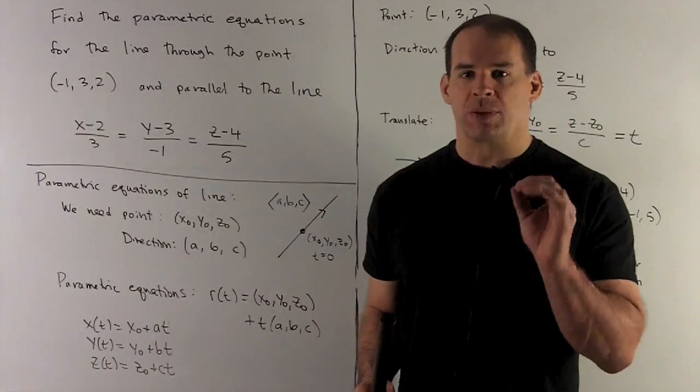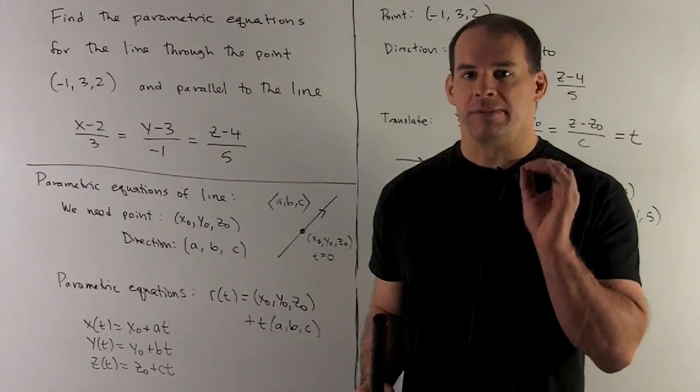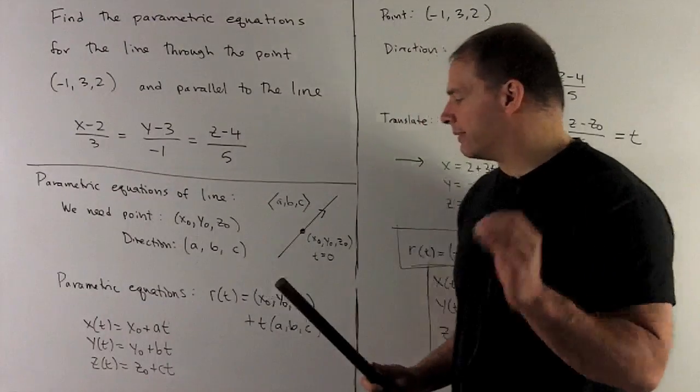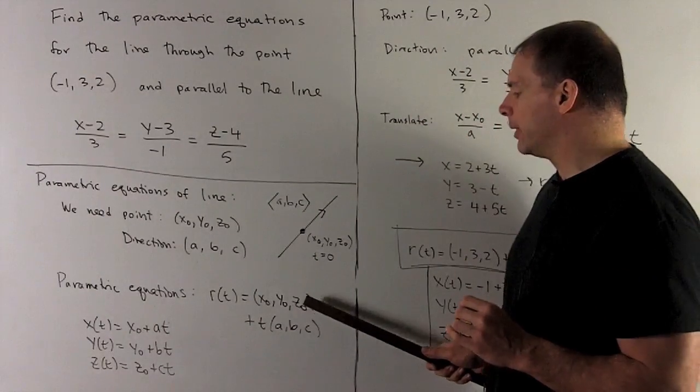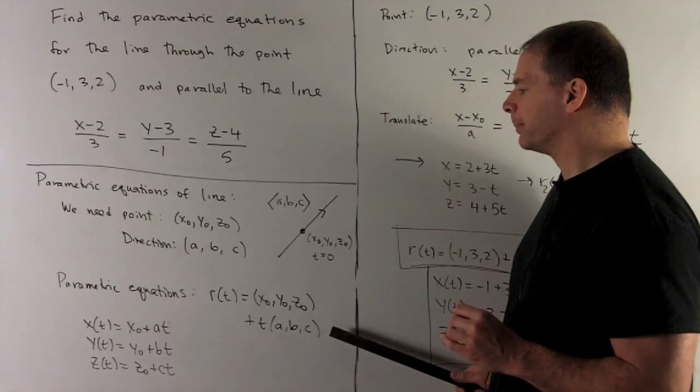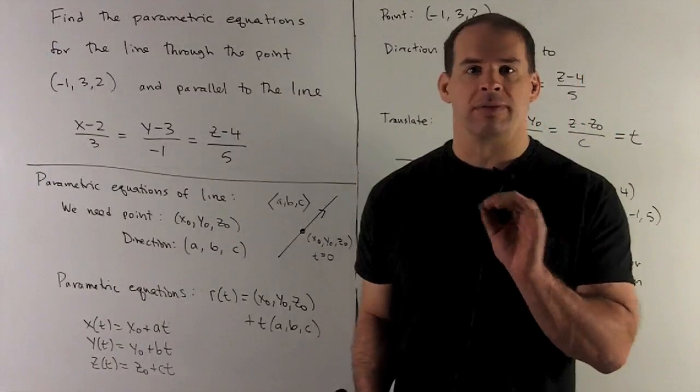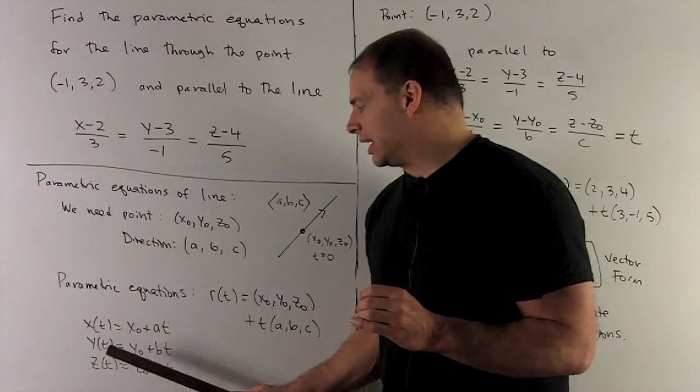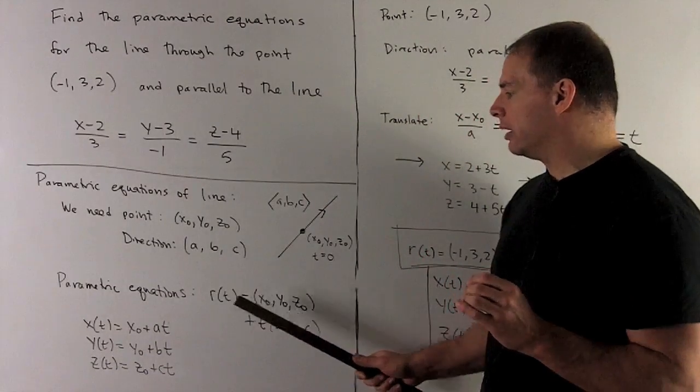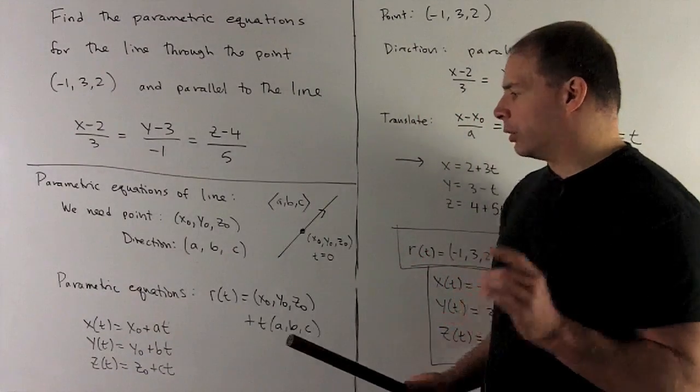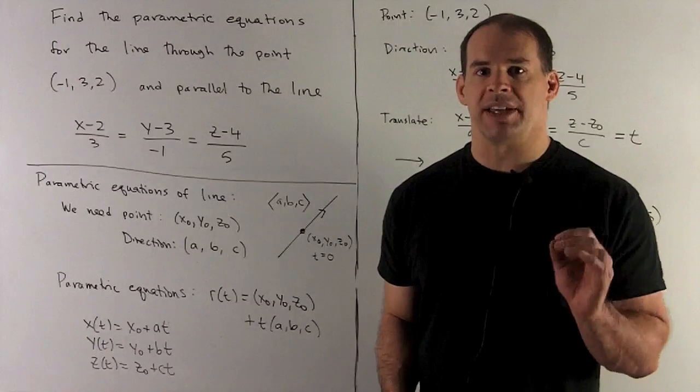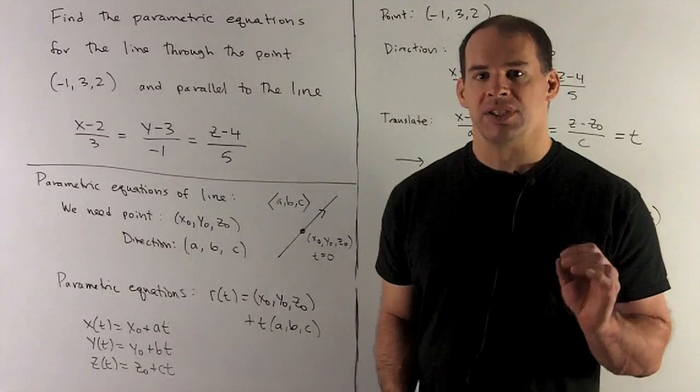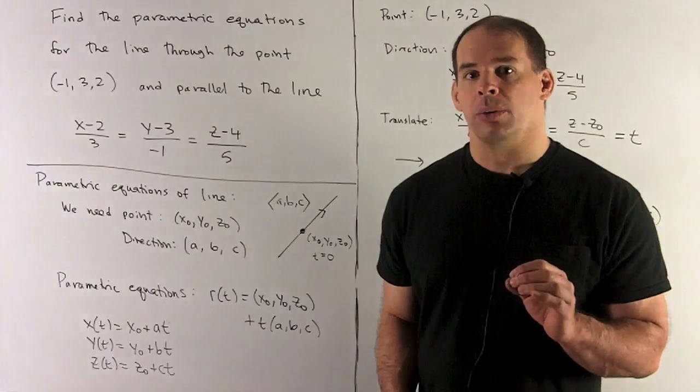The recipe for the equations has a vector form and a coordinate function form. The vector form is: take your point, add t times your direction. The coordinate equations are x equals x0 plus at, y equals y0 plus bt, z equals z0 plus ct.